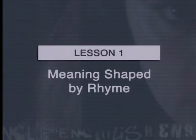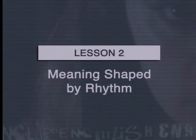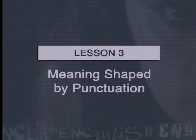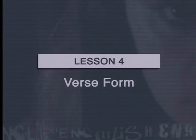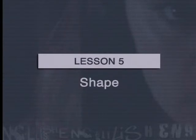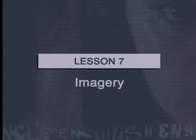The seven lessons are: Meaning shaped by rhyme. Meaning shaped by rhythm. Meaning shaped by punctuation. Verse form, shape, word choice, and imagery.